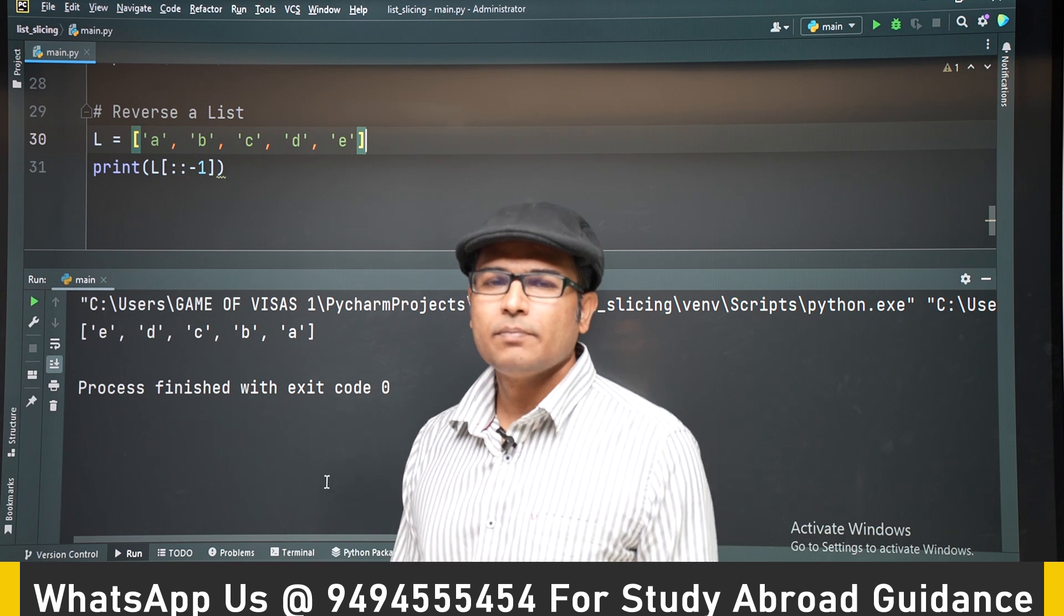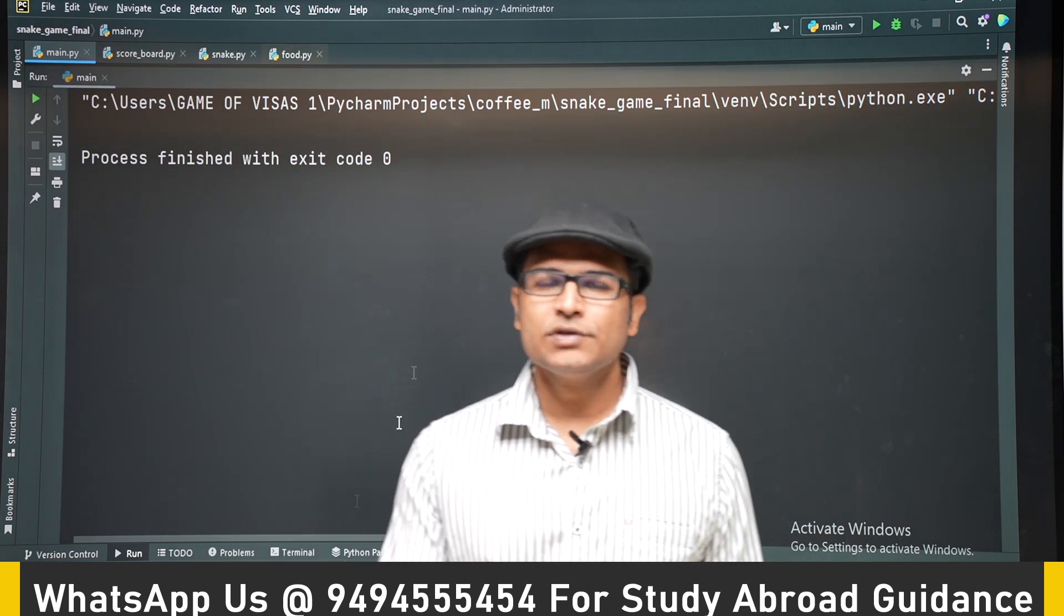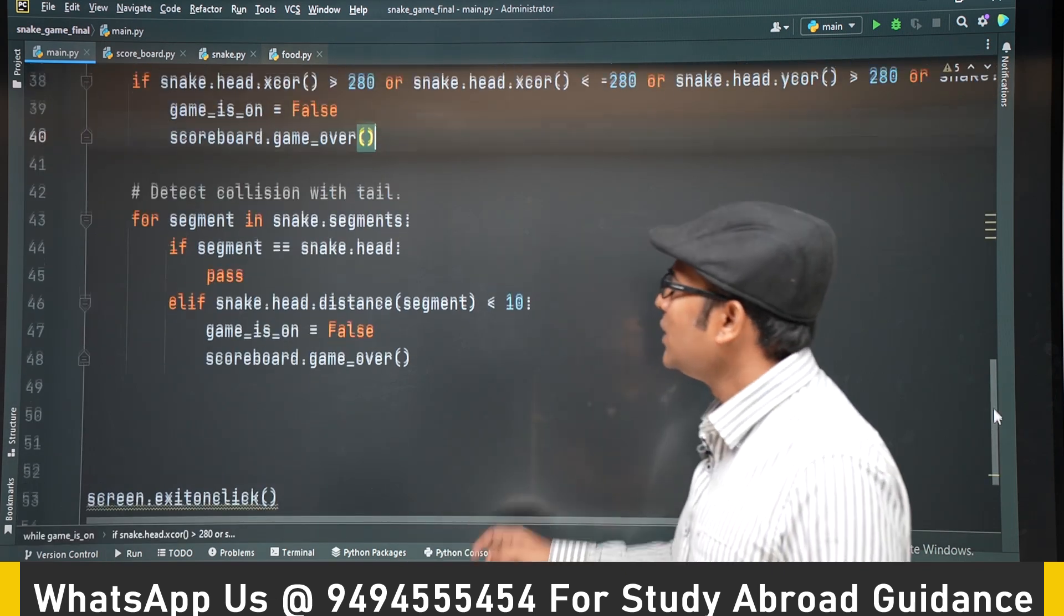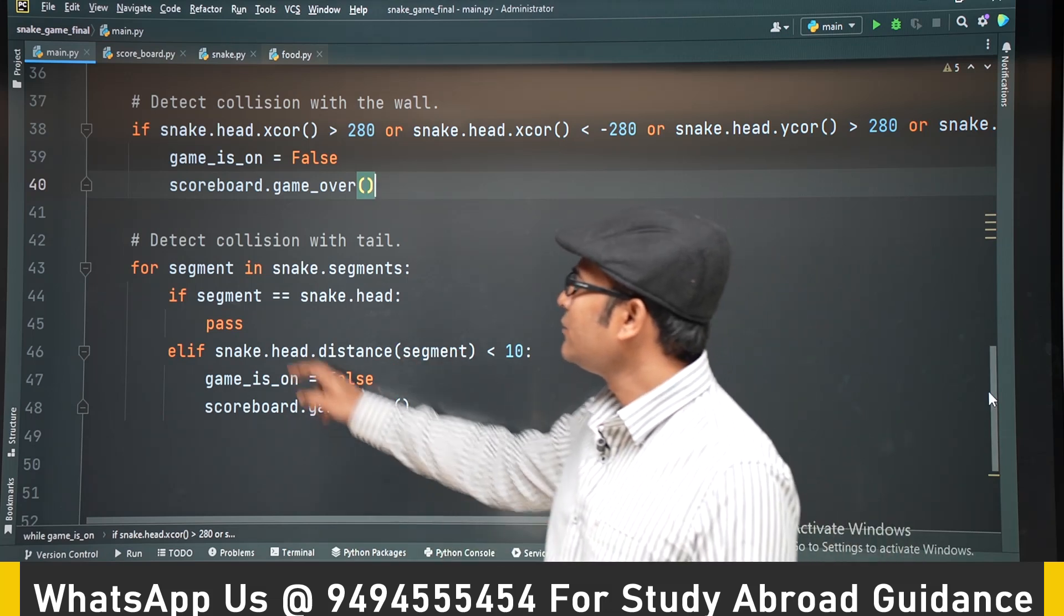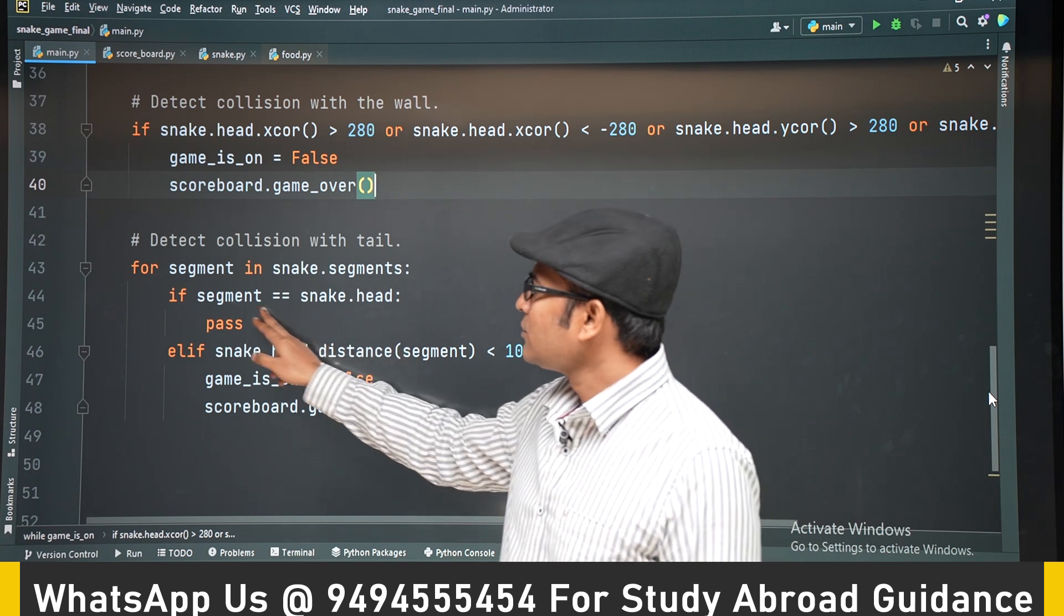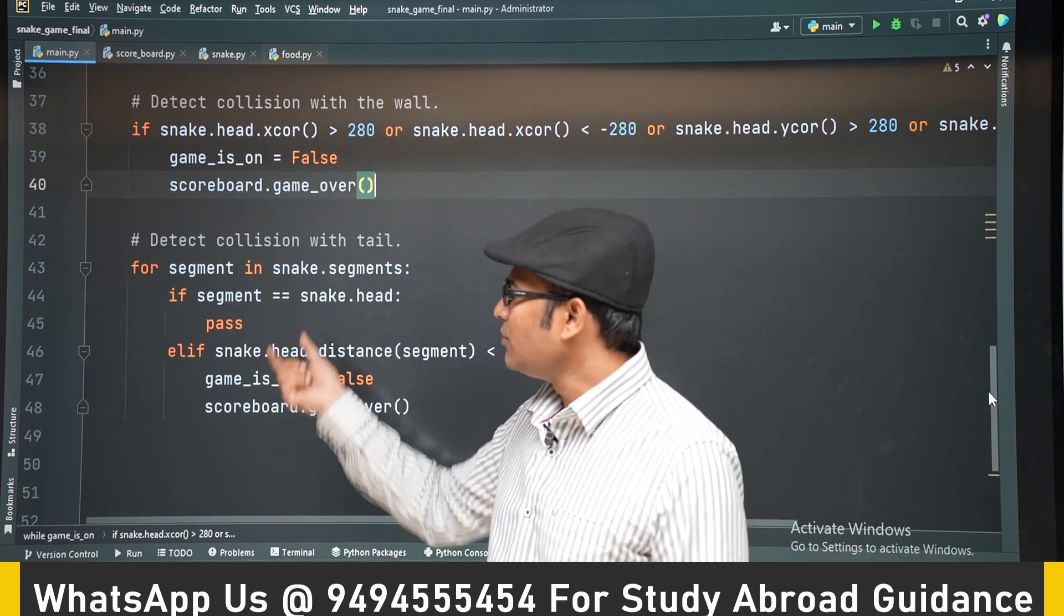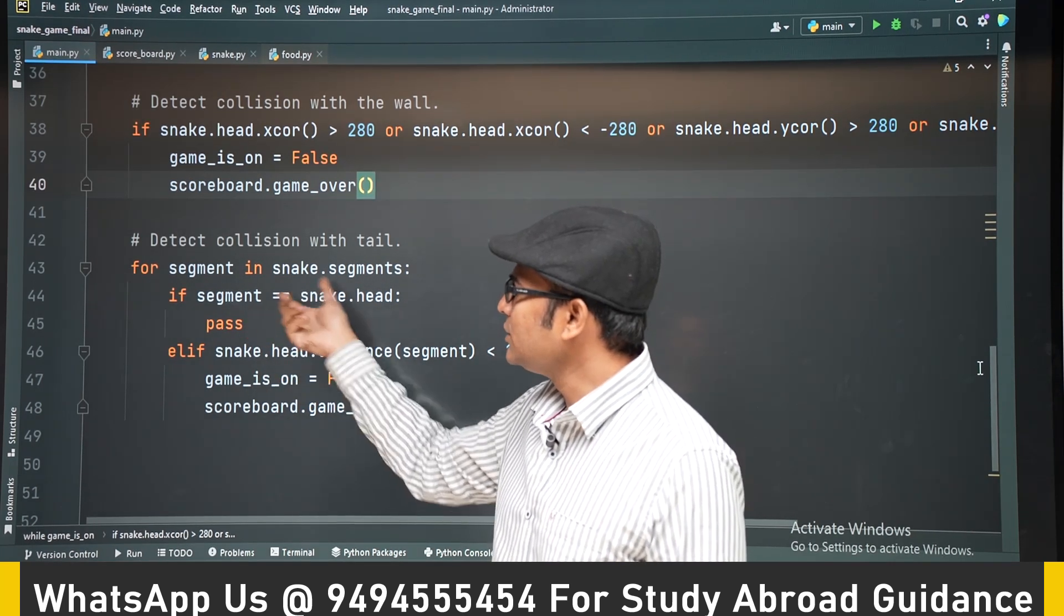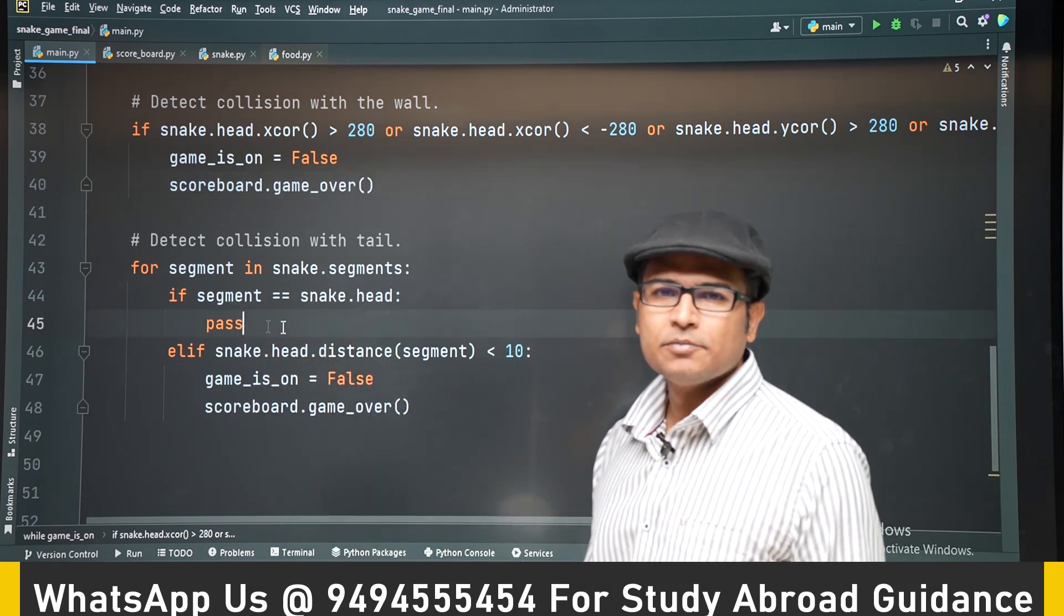Now let's go to the Python program that we have written for snake game. There let's use list slicing in order to simplify the code a bit. So earlier we have seen this, where whenever this snake head is equal to head then we are passing, we are not doing anything. If you don't want this kind of code to be written, you can use list slicing and simplify it further.